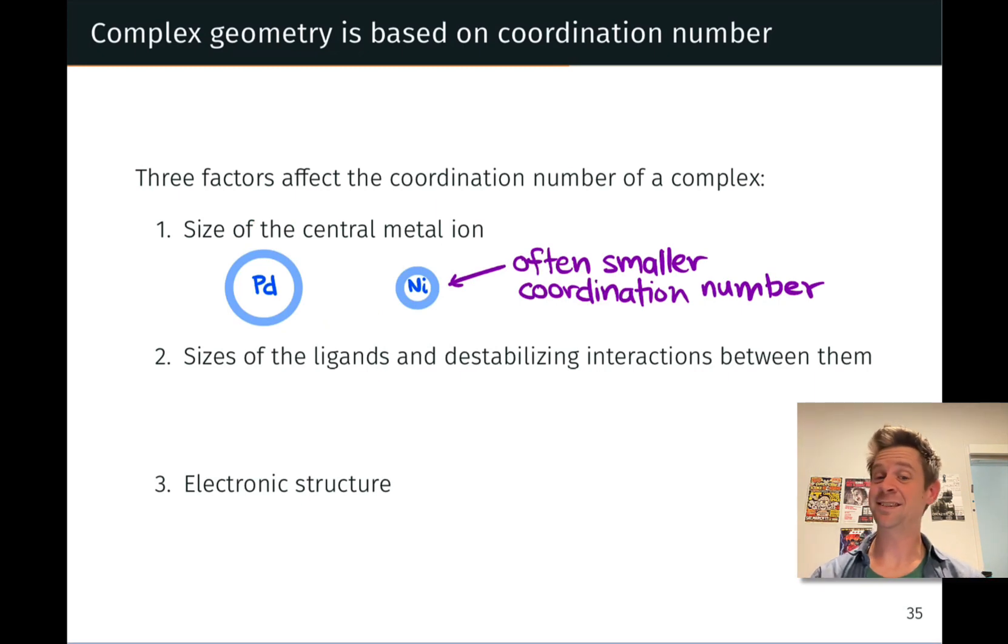Now, the sizes of the ligands also matter. Very large, very bulky ligands that take up a lot of space tend to be associated with lower or smaller coordination numbers. So consider, for example, phosphine, PH3, which is a phosphorous analog of ammonia.